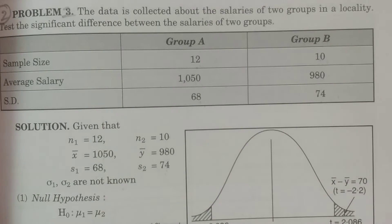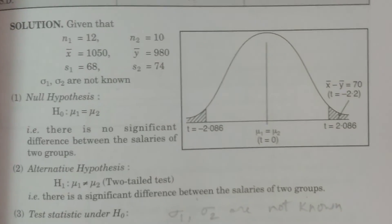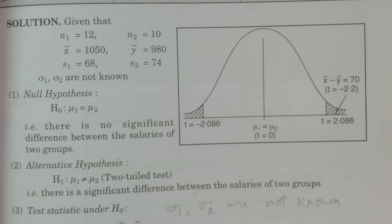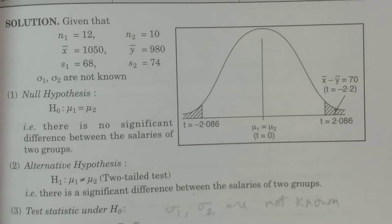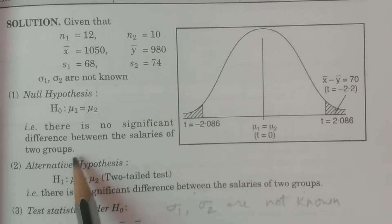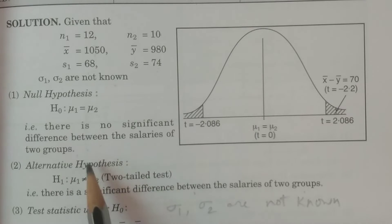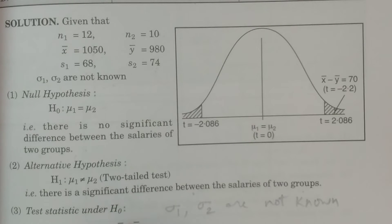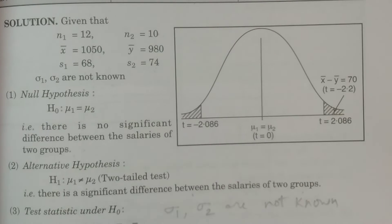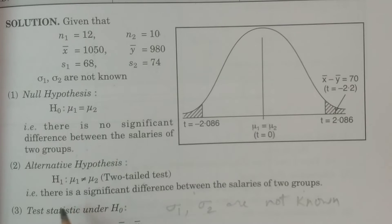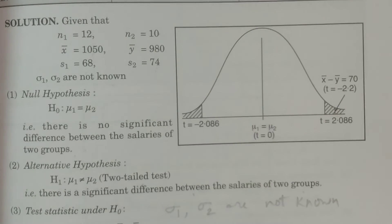We study the sigma known case and sigma not known case. Null hypothesis H0: mu1 is equal to mu2 — there is no significance difference between the salaries of two groups. Alternate hypothesis H1: mu1 not equal to mu2 — two-tailed test — there is a significance difference between the salaries of two groups.